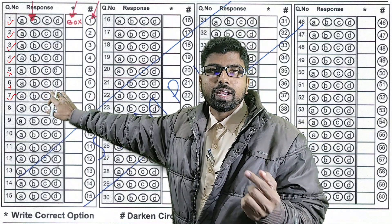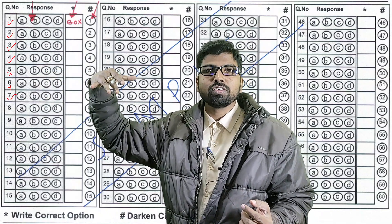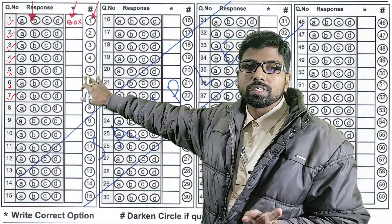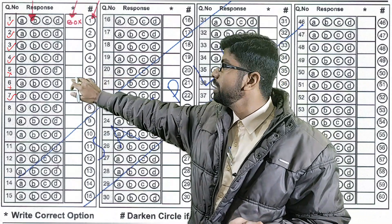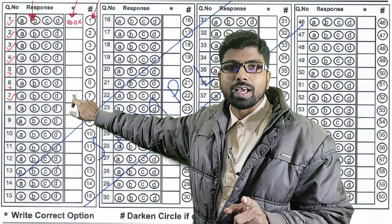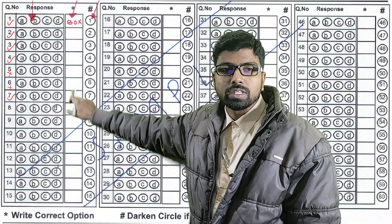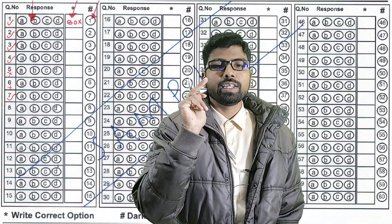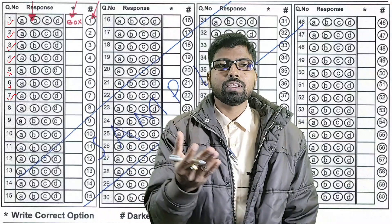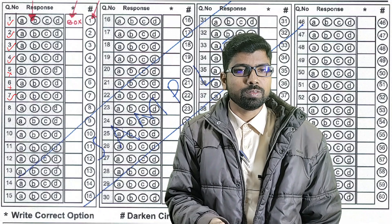I have received information that some evaluators have been placing tick and cross marks inside the handwritten answer box. Do not do that. The handwritten box is only for writing the alphabet — A, B, C, or D. If anything else is written there, the machine may not read it correctly and the students will be in trouble.